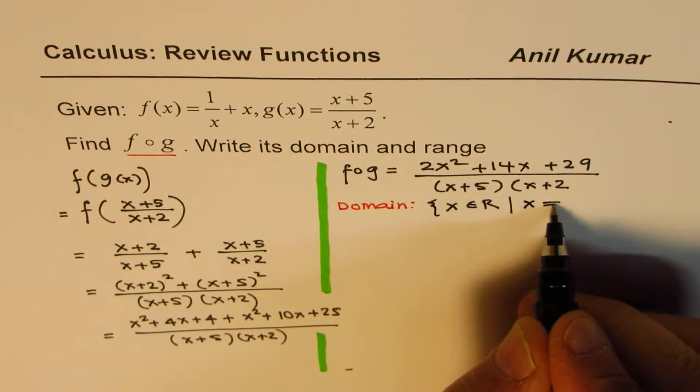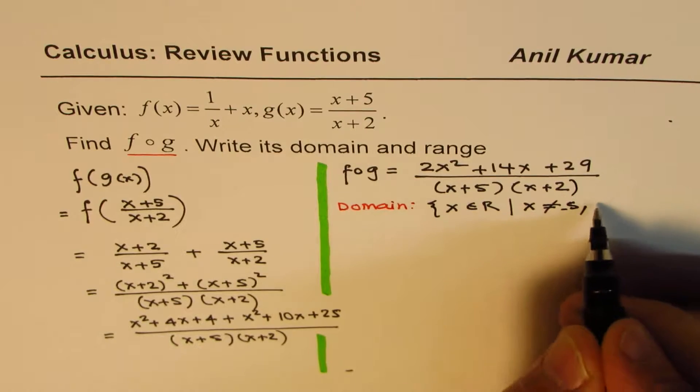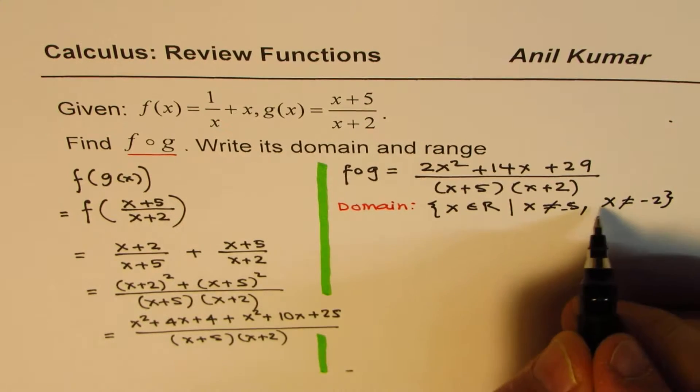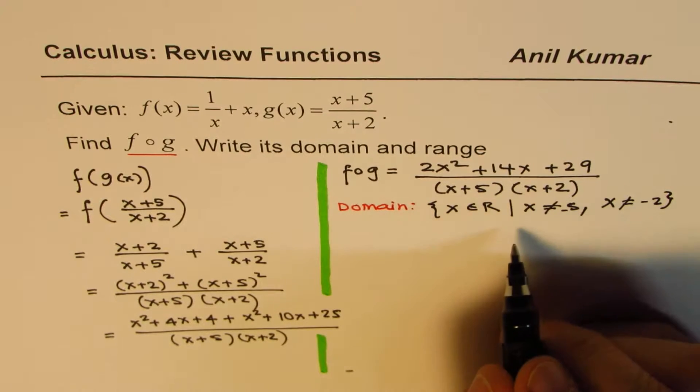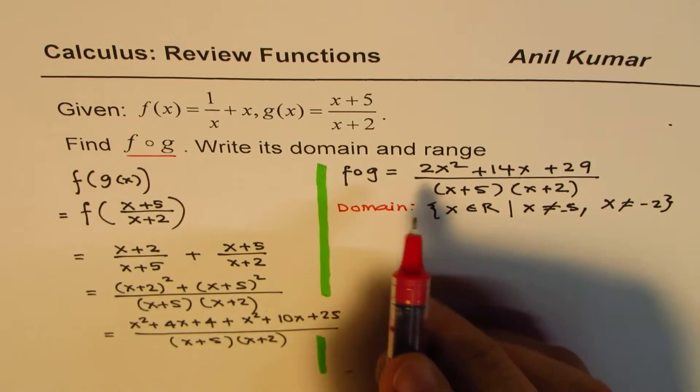where x is not equal to minus 5 and x is not equal to minus 2. Since these two values will make the denominator 0, and you cannot divide by 0. So that is easier to write, domain.